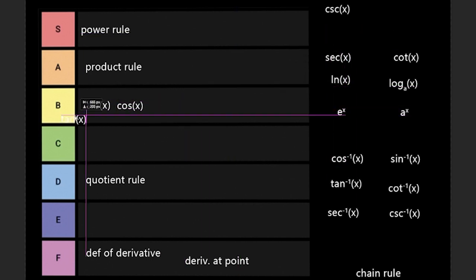Tan of x. Tan of x is secant squared of x. I give this one a C. This one is pretty easy and you can use quotient rule to find it.